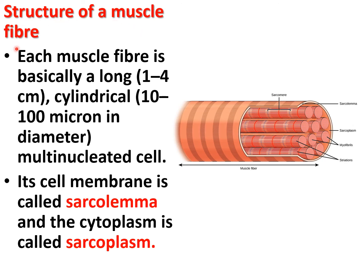Each muscle fiber is basically a long cylindrical, multinucleated cell. Its cell membrane is known as the sarcolemma, and its cytoplasm is known as sarcoplasm. Inside, myofibrils are present, and the cross lines seen are known as striations. The unit between two Z lines is called a sarcomere.